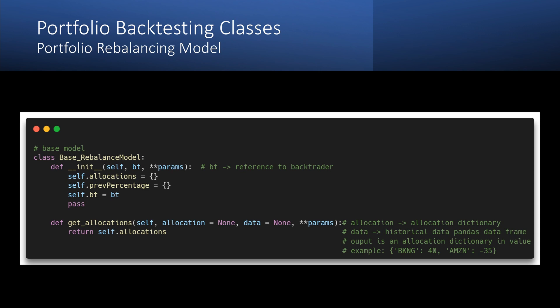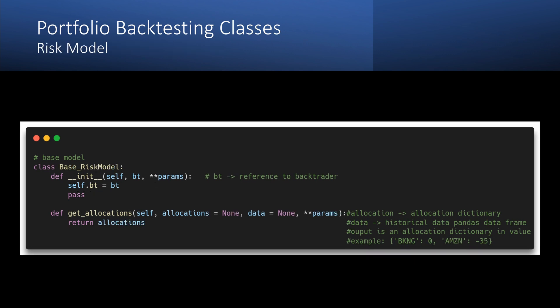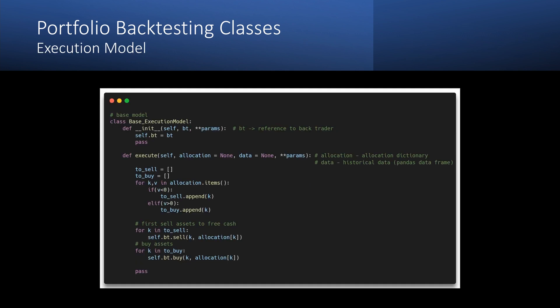The rebalance model looks very similar to the portfolio construction model. It receives the allocation dictionary and creates a new one, but with the amount of our assets instead of weights. The risk model receives output from the rebalance model and, if needed, changes it and then sends it to the execution model.